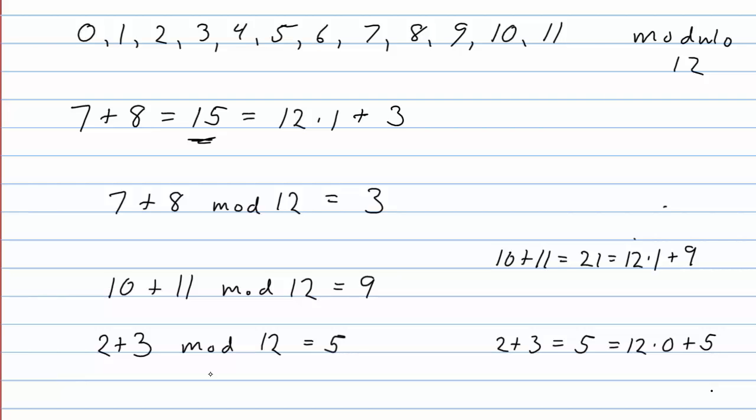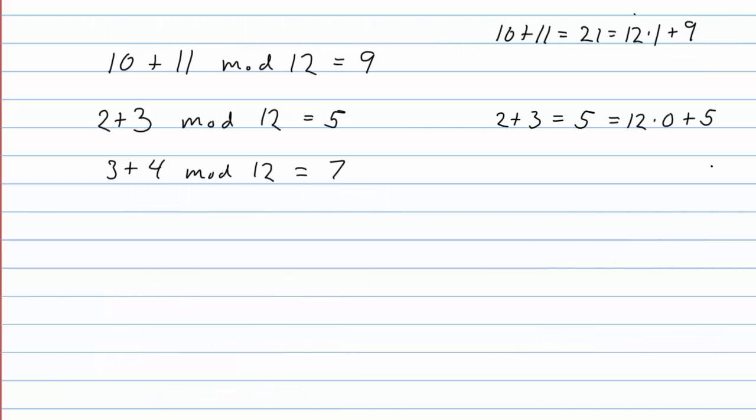And so let's do one more of these. What would 3 plus 4 mod 12 be? Well, we know that ordinary addition of 3 plus 4 would be 7. 7 is less than 12. So if we tried to divide by 12, it would only go in 0 times and the remainder would be 7. So here we can just automatically say it's 7.